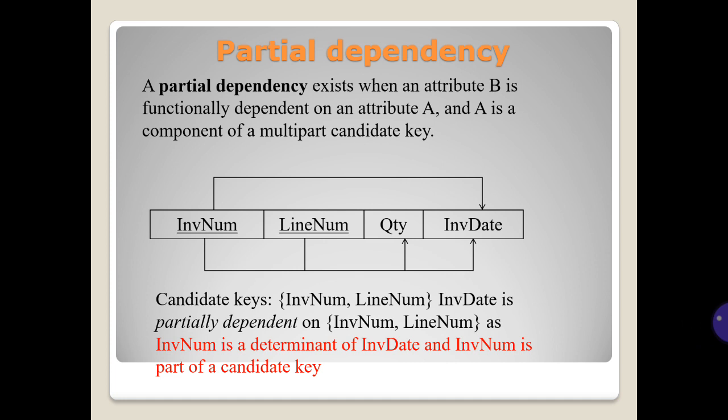A partial dependency exists when an attribute B is functionally dependent on an attribute A, and A is a component of a multi-part candidate key. For example, candidate keys include InvNum and LineNum. InvDate is partially dependent on InvNum and LineNum, as InvNum is a determinant of InvDate and InvNum is part of a candidate key.